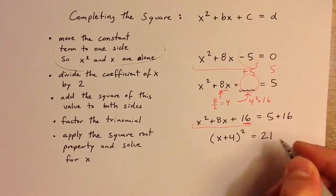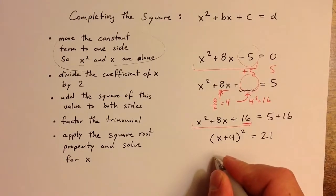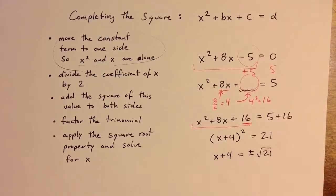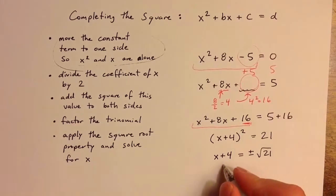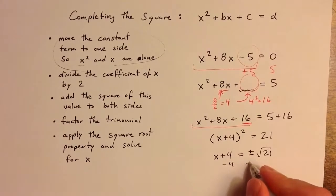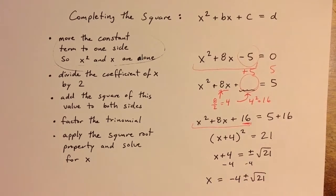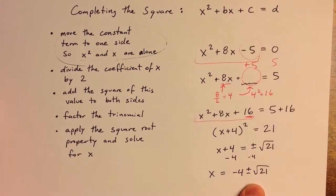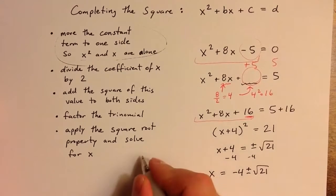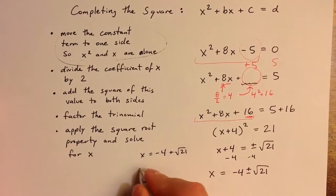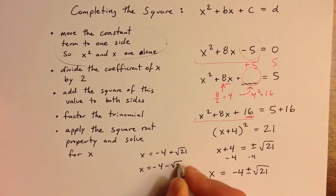And of course, 21 on the other side. So now if I take the square root of both sides, I get x plus 4 equals plus or minus the square root of 21, applying the square root property. I can finish the solution by subtracting 4 from both sides, so x equals negative 4 plus or minus the square root of 21. This represents two separate solutions: x equals negative 4 plus the square root of 21, and x equals negative 4 minus the square root of 21.